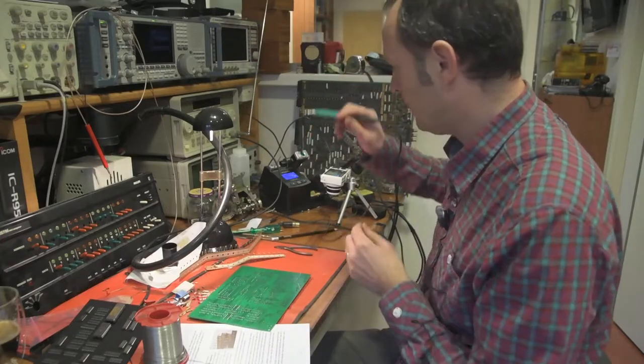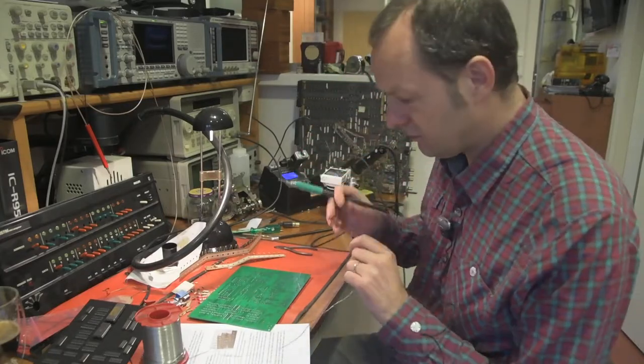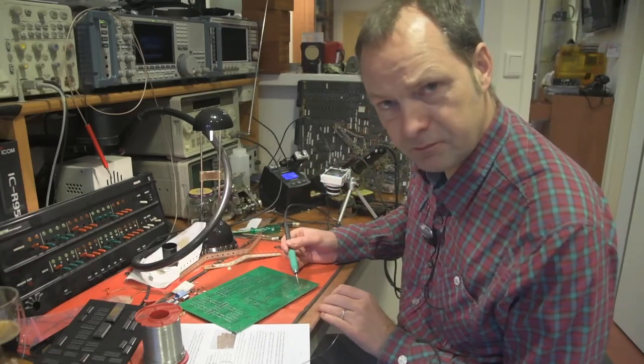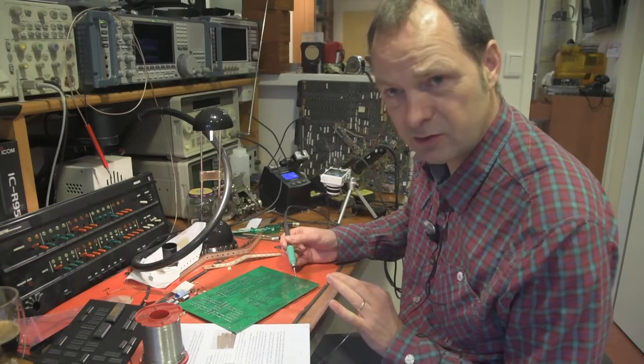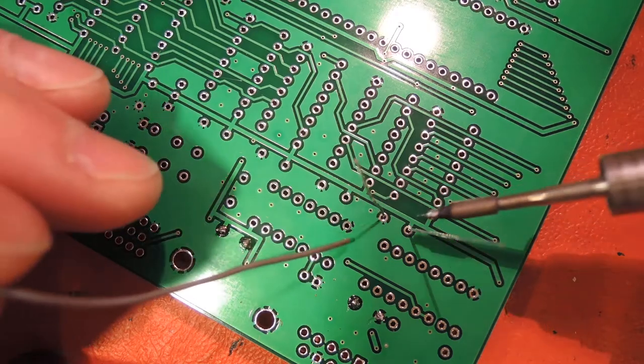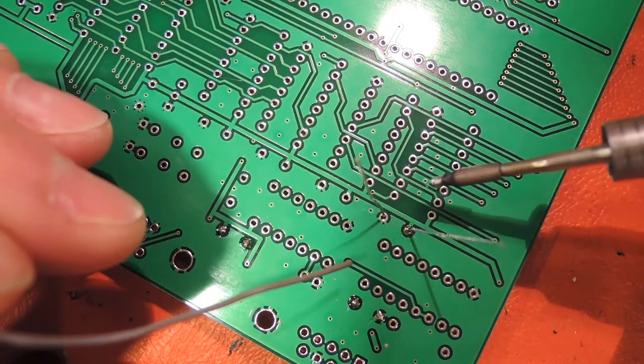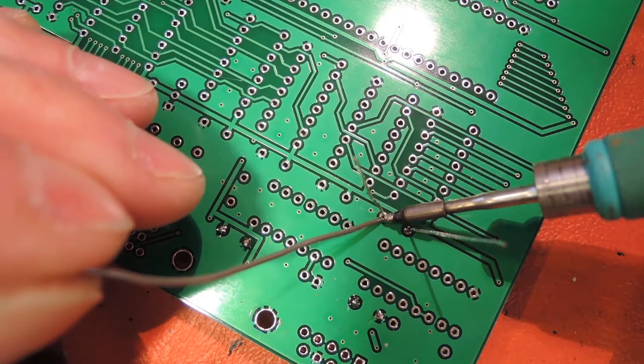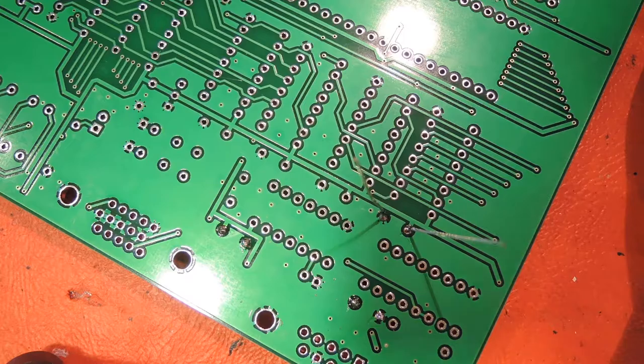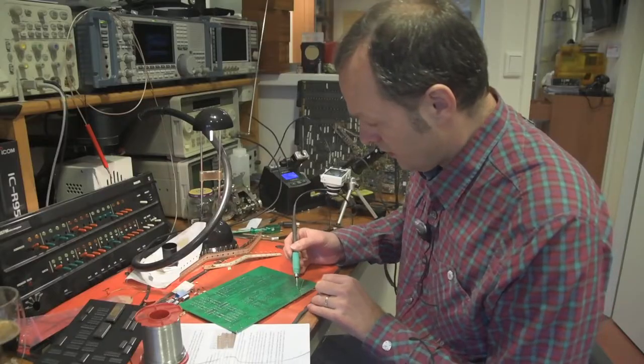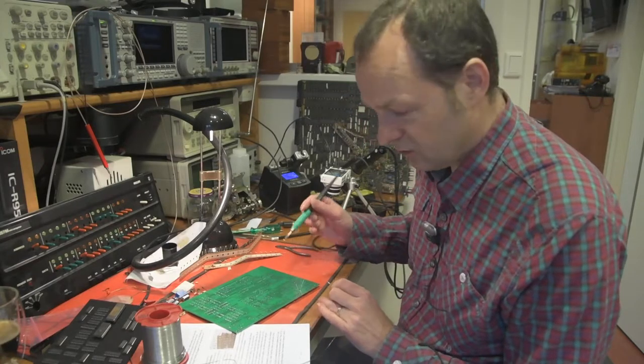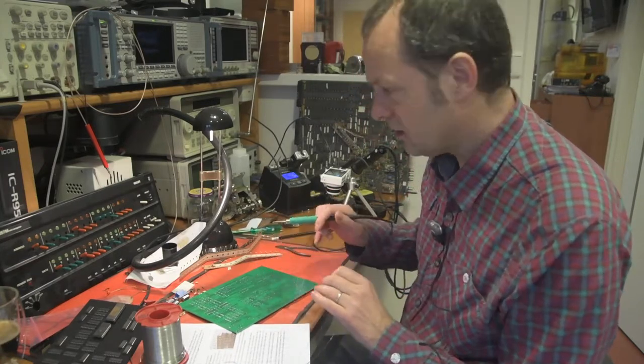Now for soldering we take the soldering iron and some solder and the trick is to heat up the pin, apply solder, remove the solder and remove the heat. So I heat it up, apply some solder, remove it, remove the heat and I have a nice joint. And it might take some practice to figure out just the right amount of solder to use. So this is the way we do this for all 40 capacitors.